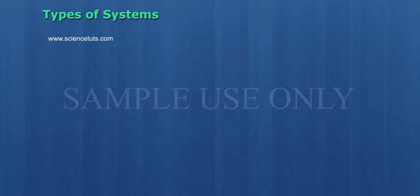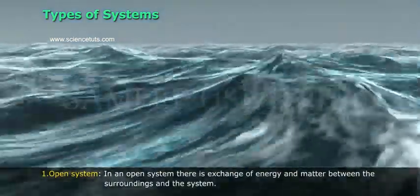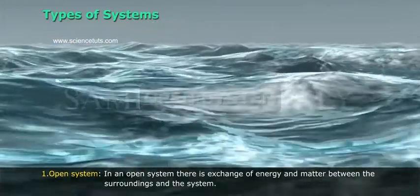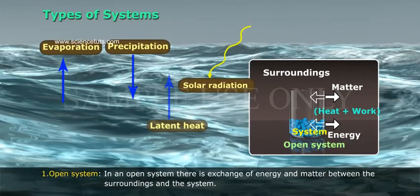Types of systems. 1. Open system: In an open system there is exchange of energy and matter between the surroundings and the system.